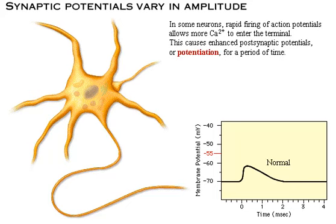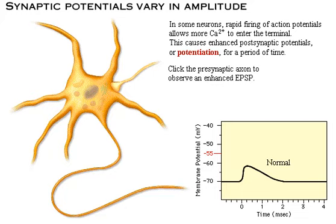In some neurons, rapid firing of action potentials allows more calcium to enter the terminal. This causes enhanced post-synaptic potentials, or potentiation, for a period of time. Click the presynaptic axon to observe an enhanced EPSP.